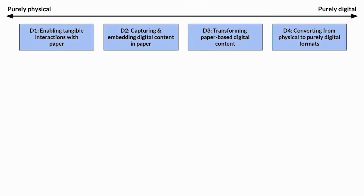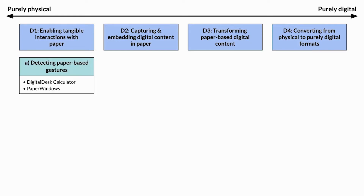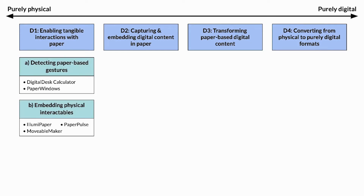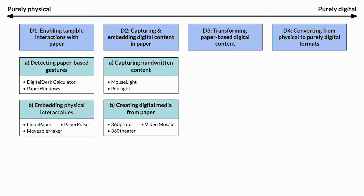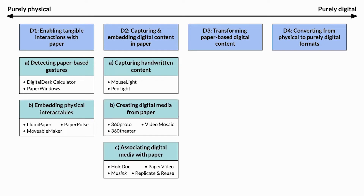The first class of interactions leverages paper as a tangible user interface for manipulating physical or digital content, including detecting paper-based gestures and embedding physical components like paper-based electronics to provide users with visual or auditory feedback. The second class is capturing and embedding digital content in paper, including capturing handwritten content using digital pens, creating digital media from paper using camera-based techniques, and associating digital content like photos and videos.